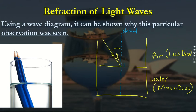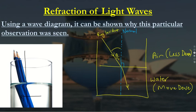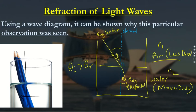Looking at our normal line here, you can see how the pencil has kind of moved backwards as it's gone from air to water. What's happening is we have our incident ray and our refracted ray. The refracted angle is smaller than the angle of incidence — theta_i is bigger than theta_r — assuming that n1 is bigger than n2, meaning it bends back towards the normal.